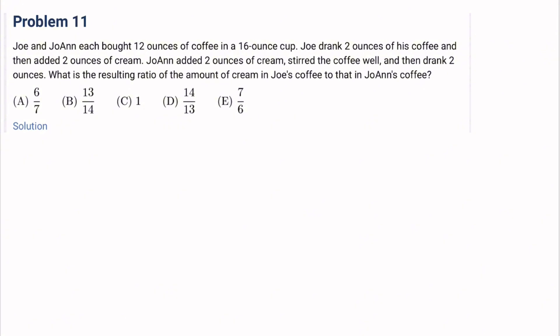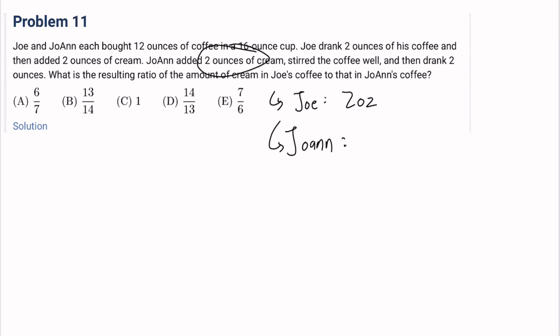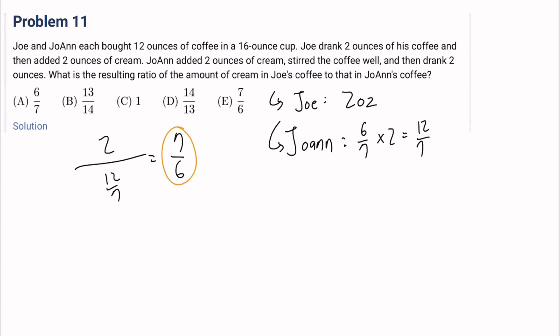Problem 11: Joe has 2 ounces of cream. Joanne added 2 ounces of cream first and then drank 2 ounces, which is 1 over 7 of the whole thing. So she has 6 over 7 left, and her initial amount of cream was 2, giving 12 over 7. The ratio is 2 over (12 over 7), which equals 7 over 6. The answer is E.